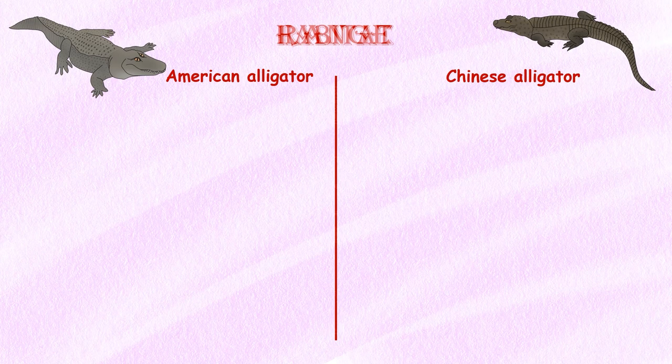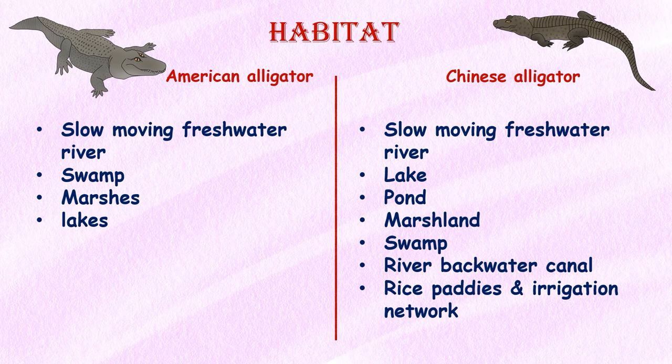Habitat. Alligators are usually found in freshwater, slow-moving rivers. They also live in swamps, marshes, and lakes. Chinese alligators are found in slow-moving freshwater rivers and streams, including lakes, ponds, swamps, marshlands, reservoirs, river backwater canals, rice paddies, and irrigation networks.